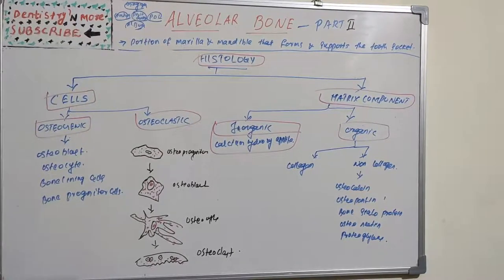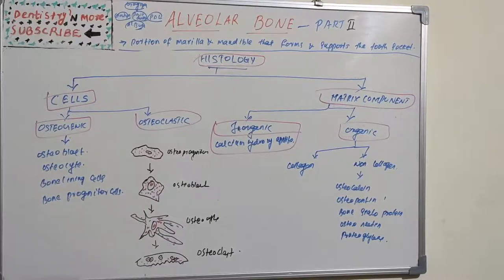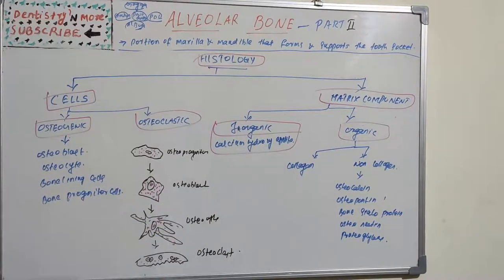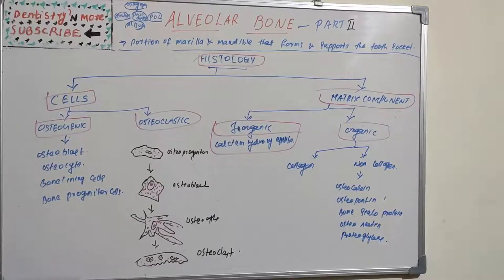Osteoclastic cells are basically just the osteoclast. In matrix components we have inorganic and organic. In inorganic we have calcium hydroxyapatite crystals. In organic we have collagen matrix and non-collagenous proteins. Non-collagenous proteins include osteocalcin, osteopontin, bone sialoprotein, osteonectin, and proteoglycans.